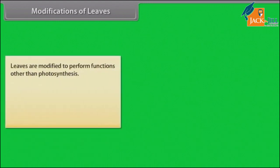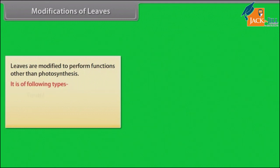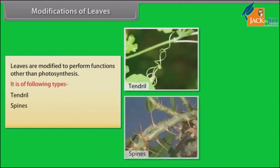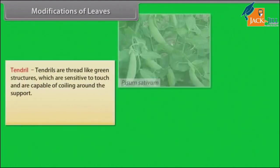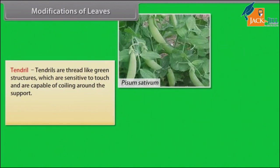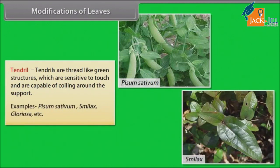Leaves are modified to perform functions other than photosynthesis. Modifications include tendril, spines, and food storage. Tendrils are thread-like green structures which are sensitive to touch and are capable of coiling around a support. Examples: Pisum sativum, Smilax, and Gloriosa.